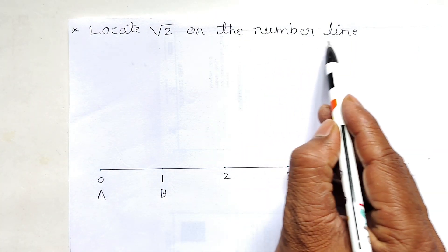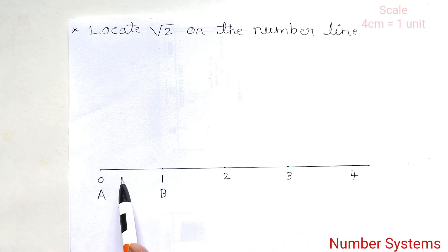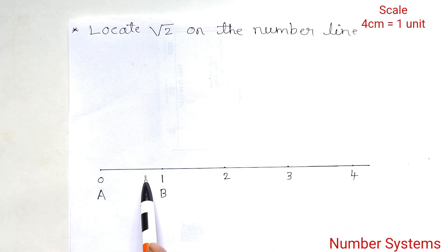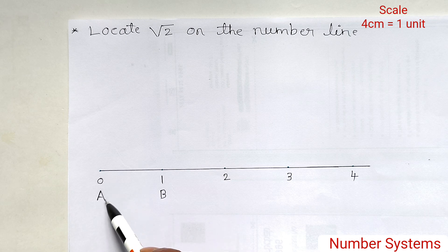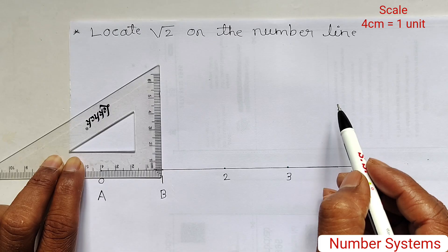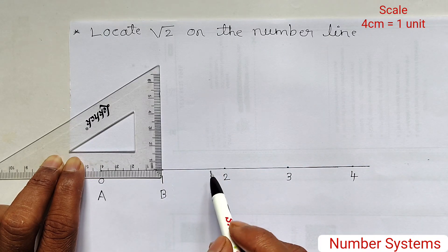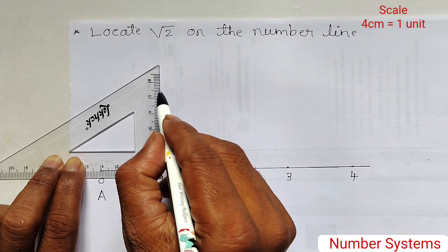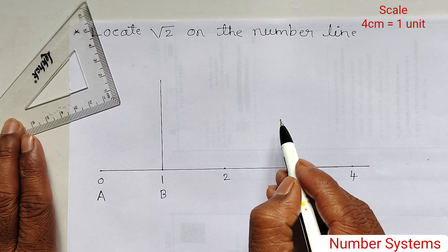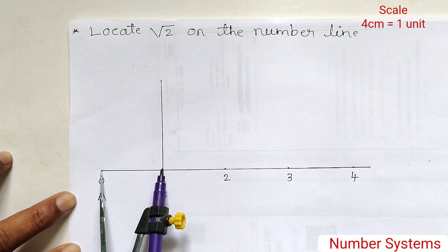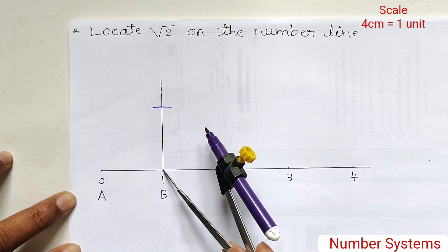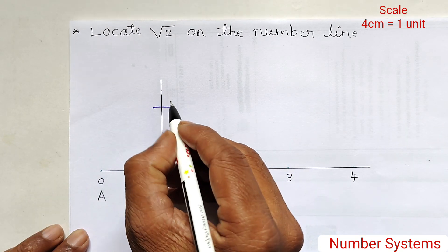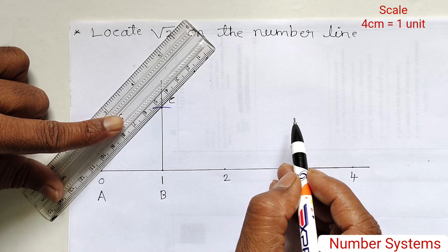First, locate root 2 on the number line. This is a number line; I have taken 4 cm equal to 1 unit, so from 0 to 1 is 4 cm, 1 to 2 is 4 cm, 2 to 3 is 4 cm, and so on. I have denoted 0 as point A and 1 as point B. Draw a perpendicular line to the number line at point B using a set square. Next, expand the compass from A to B (that is 1 unit) and draw an arc from point B to the perpendicular line. This point is C. Join points A and C.